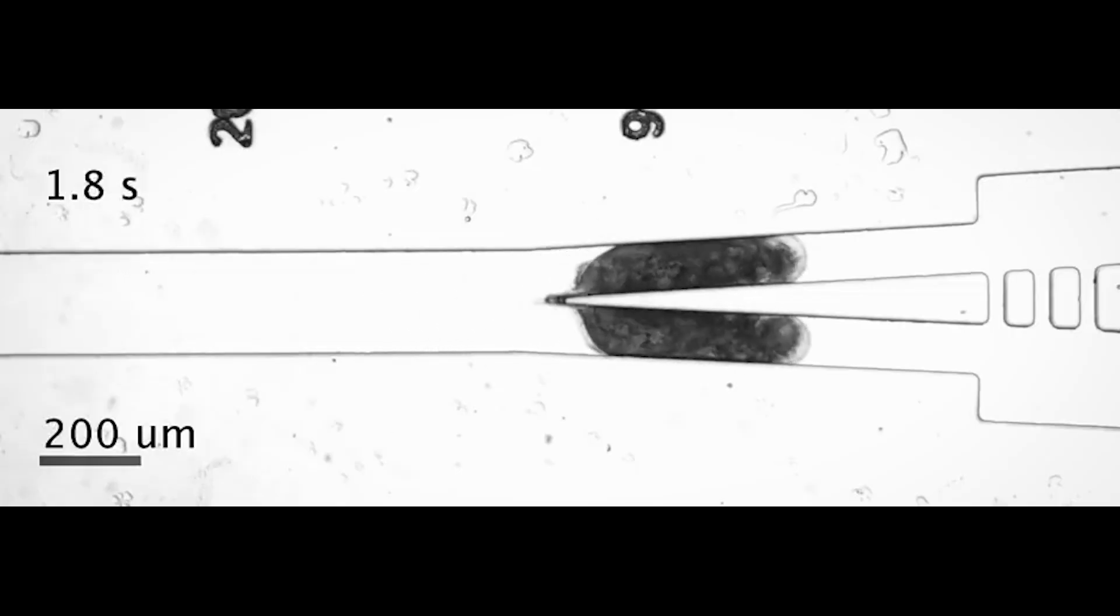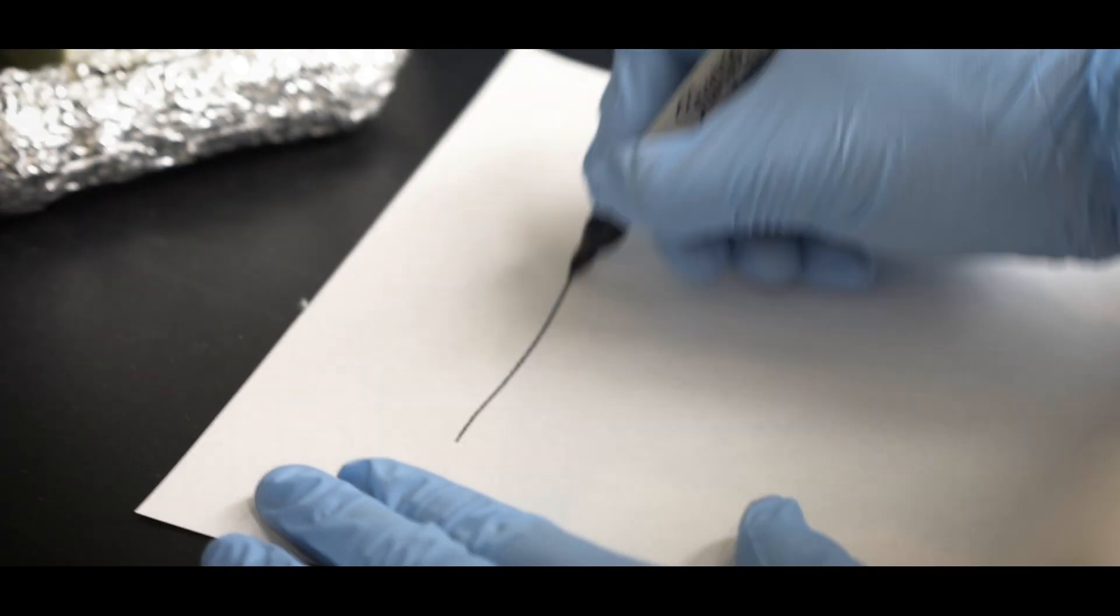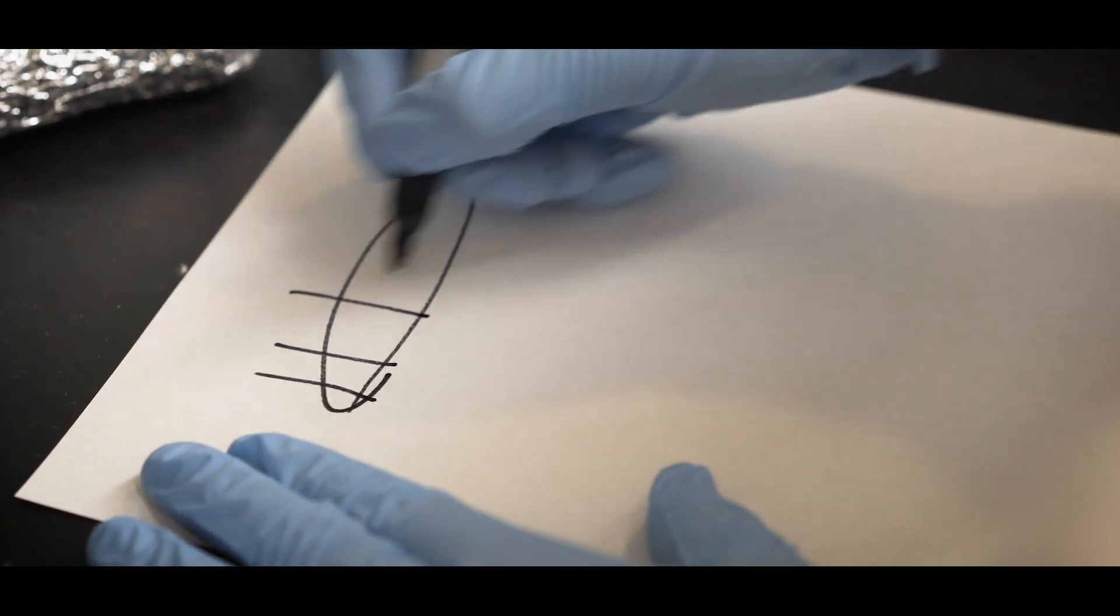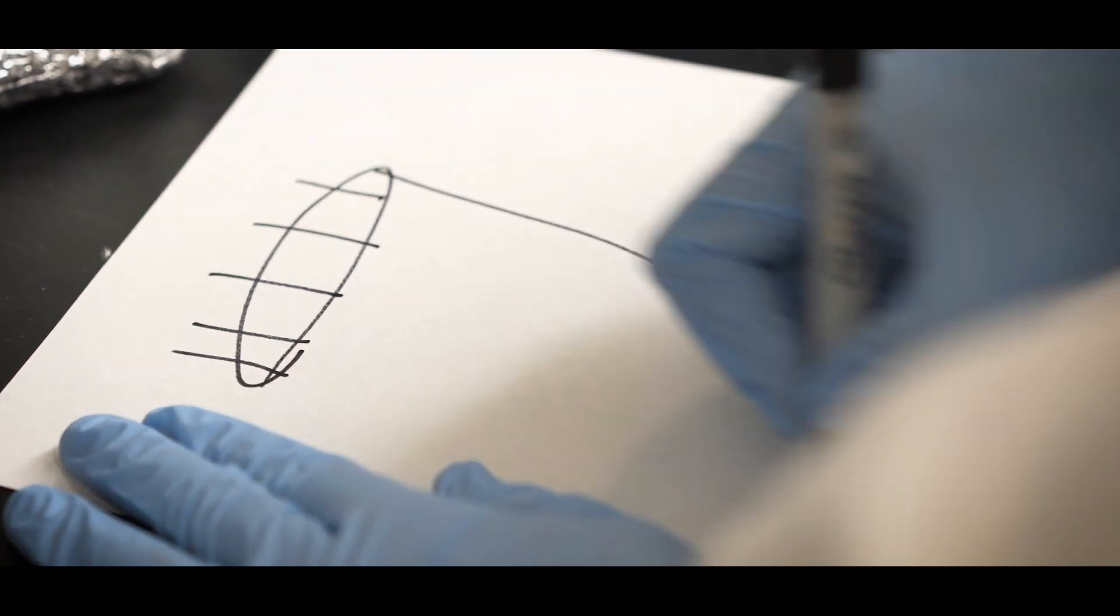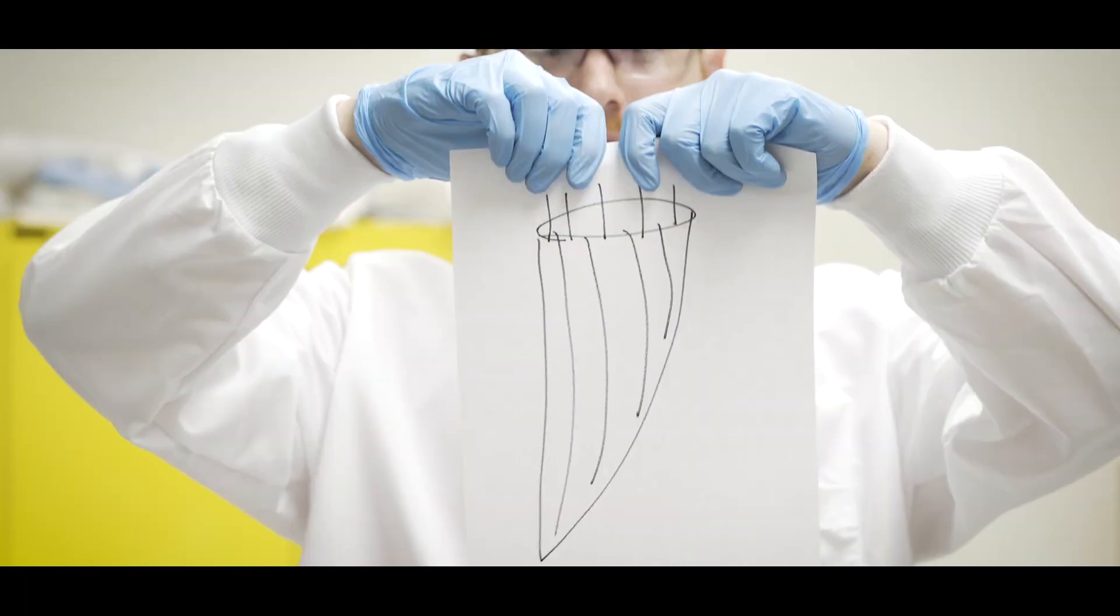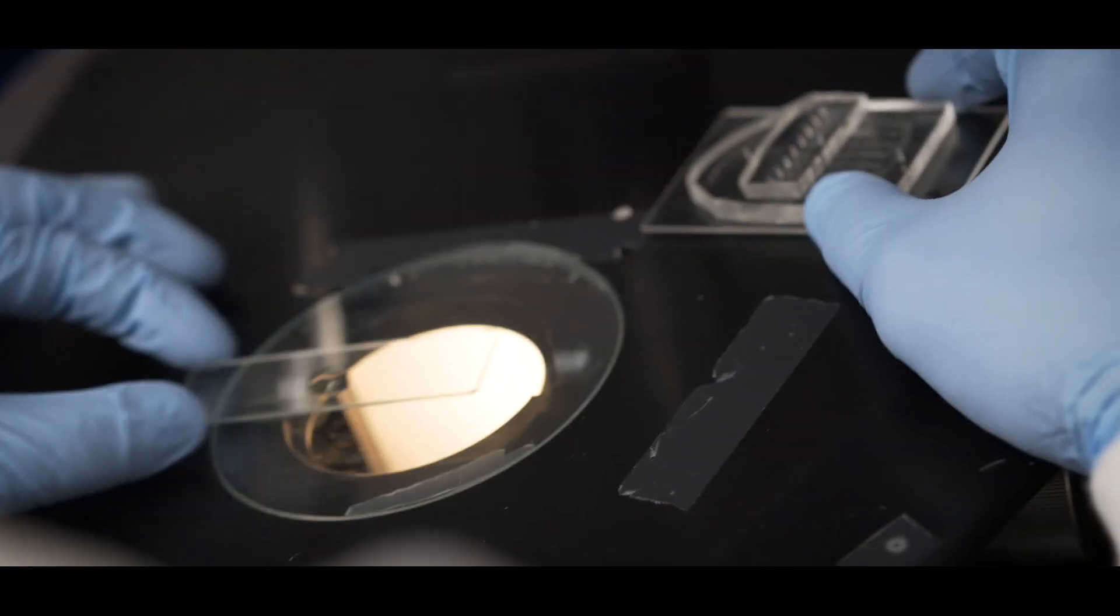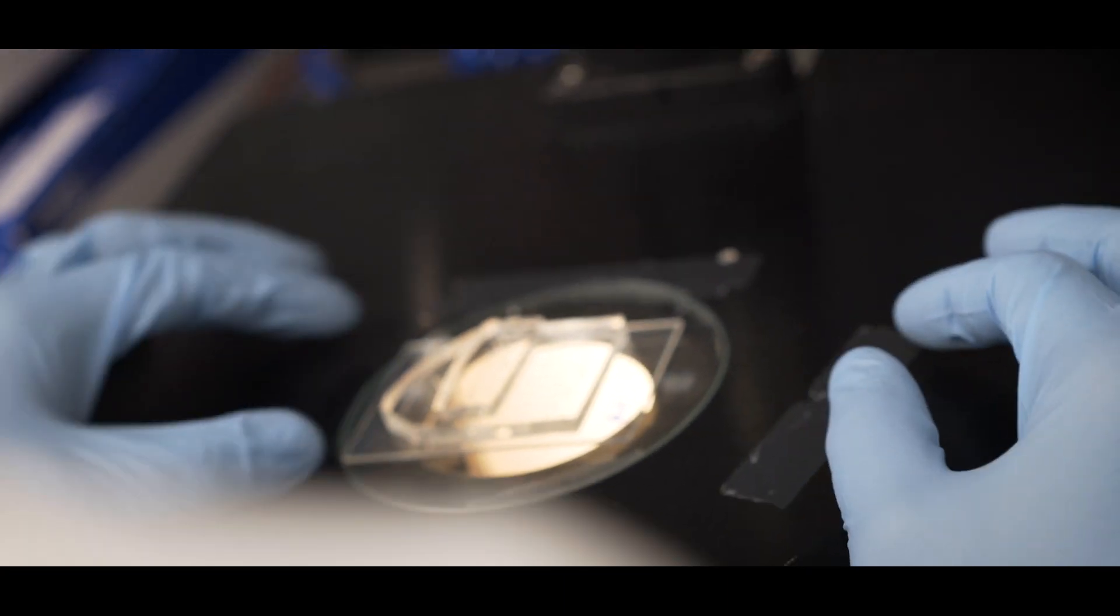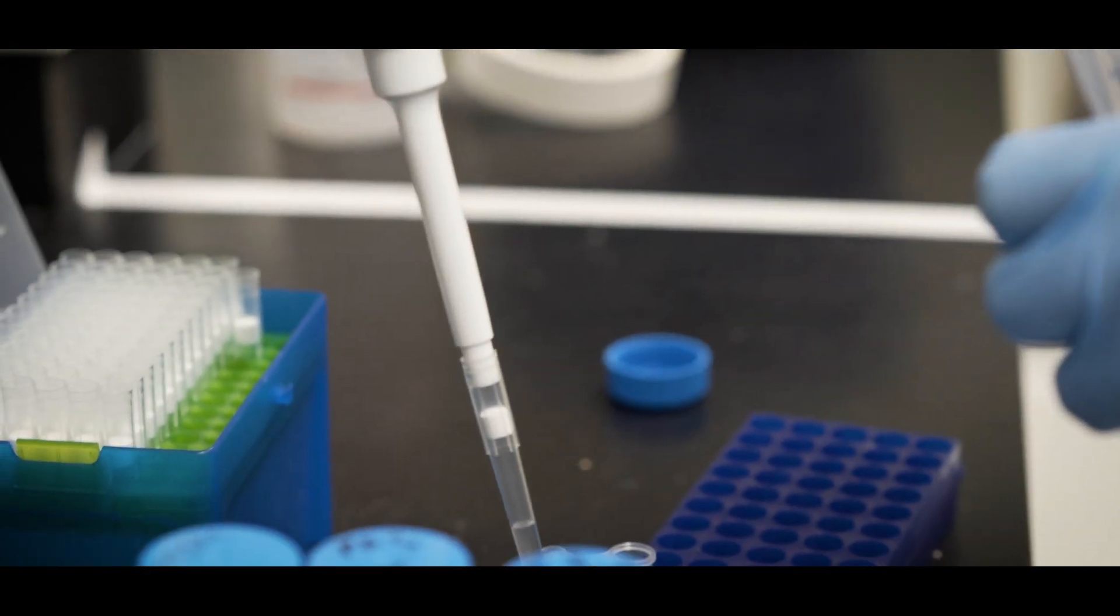As part of the CCC, we've developed a microfluidic device that can cut single cells in half 200 times faster than by hand. We've also used it to cut different structures such as organoids, which are small pseudo-tissues that represent the biology of the organ they're modeling.